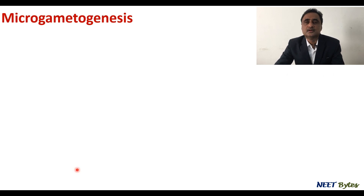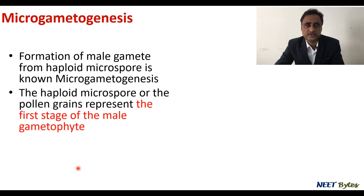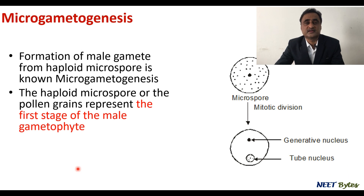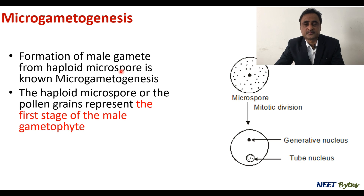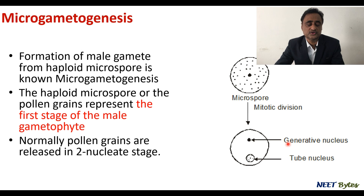Now let's talk about micro gametogenesis. The starting point is haploid microspores, and the ending point is the formation of male gametes. A microspore is a single-nuclear structure. By mitotic division — which is a nuclear division, not a cellular division — two nuclei are formed: the generative cell nucleus and the vegetative cell nucleus, also called the tube nucleus.